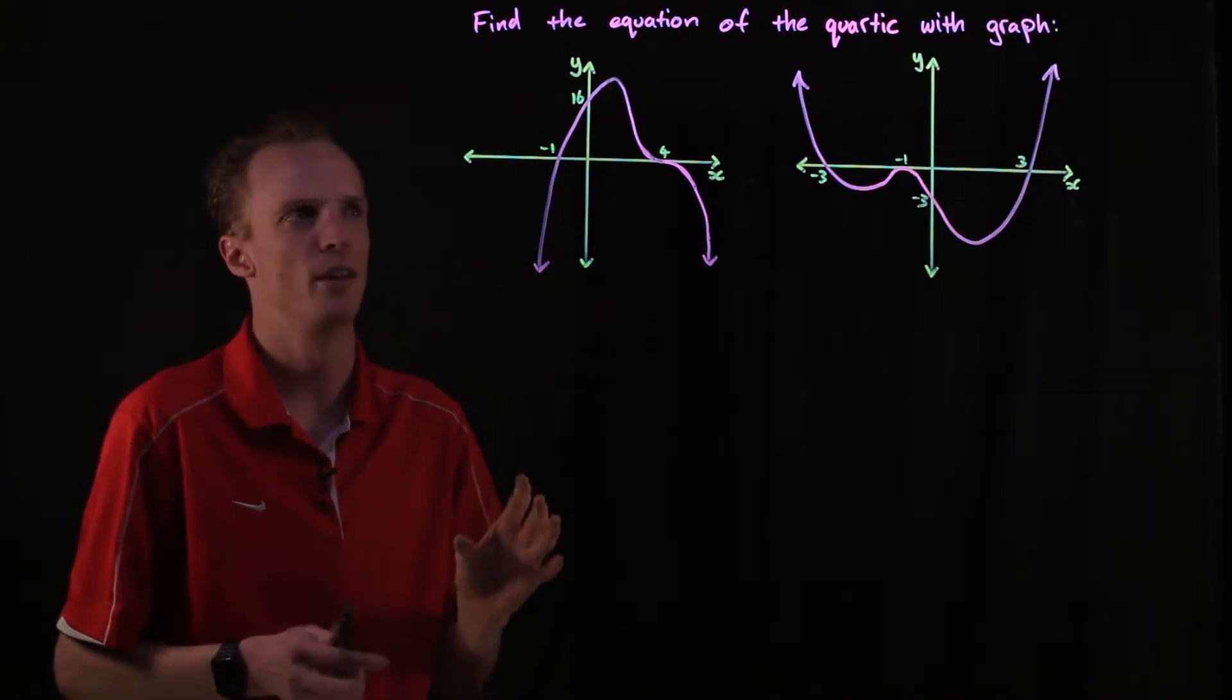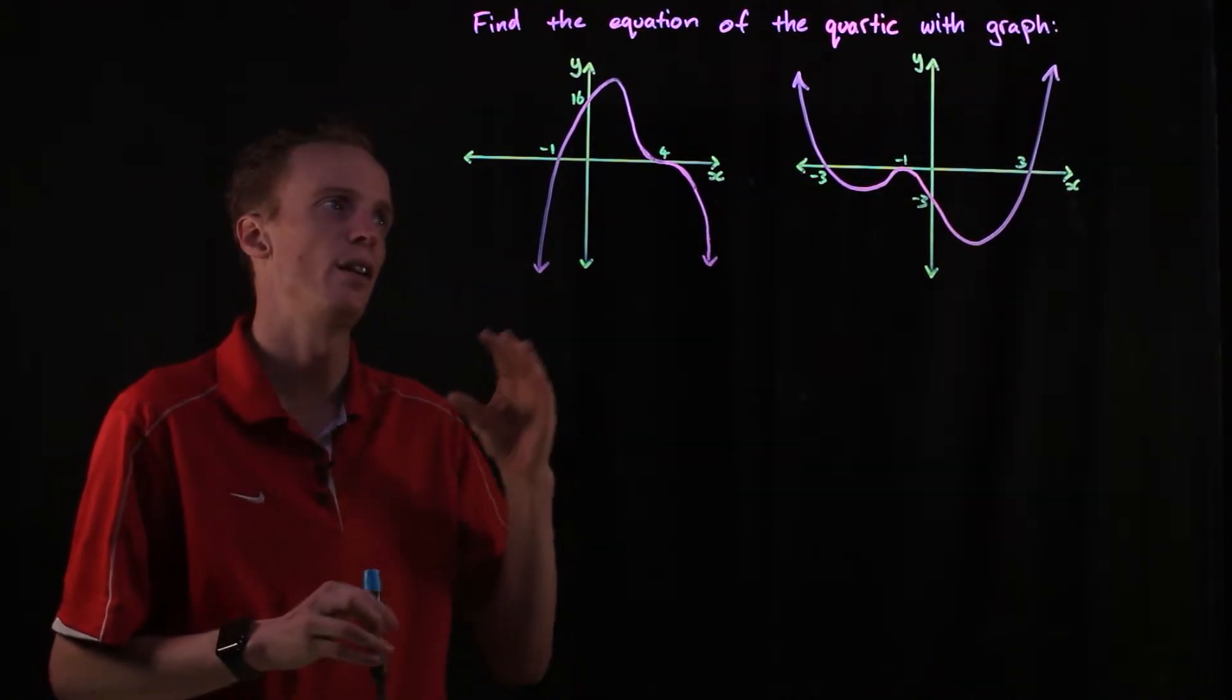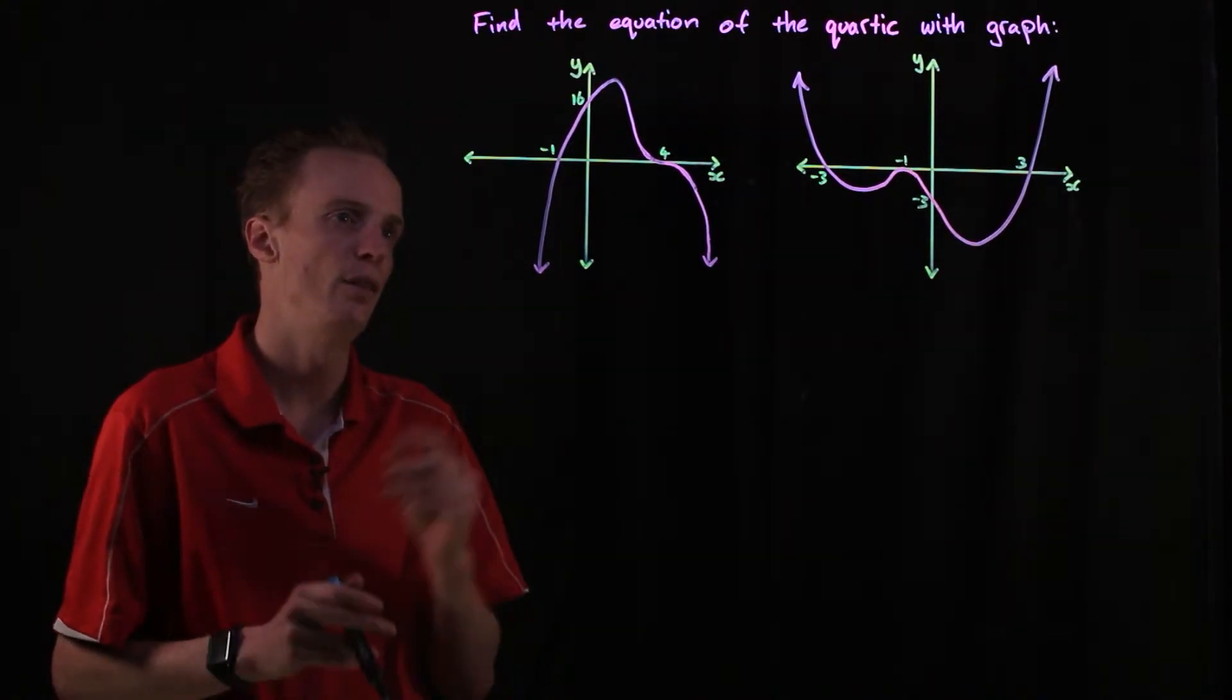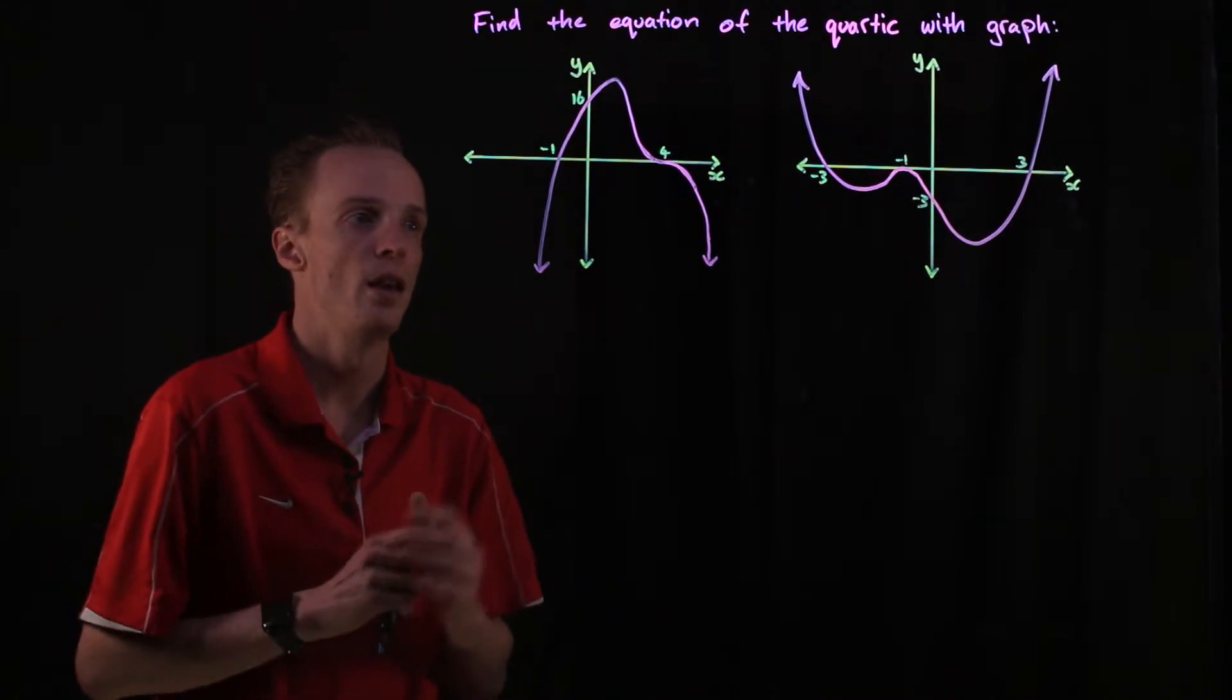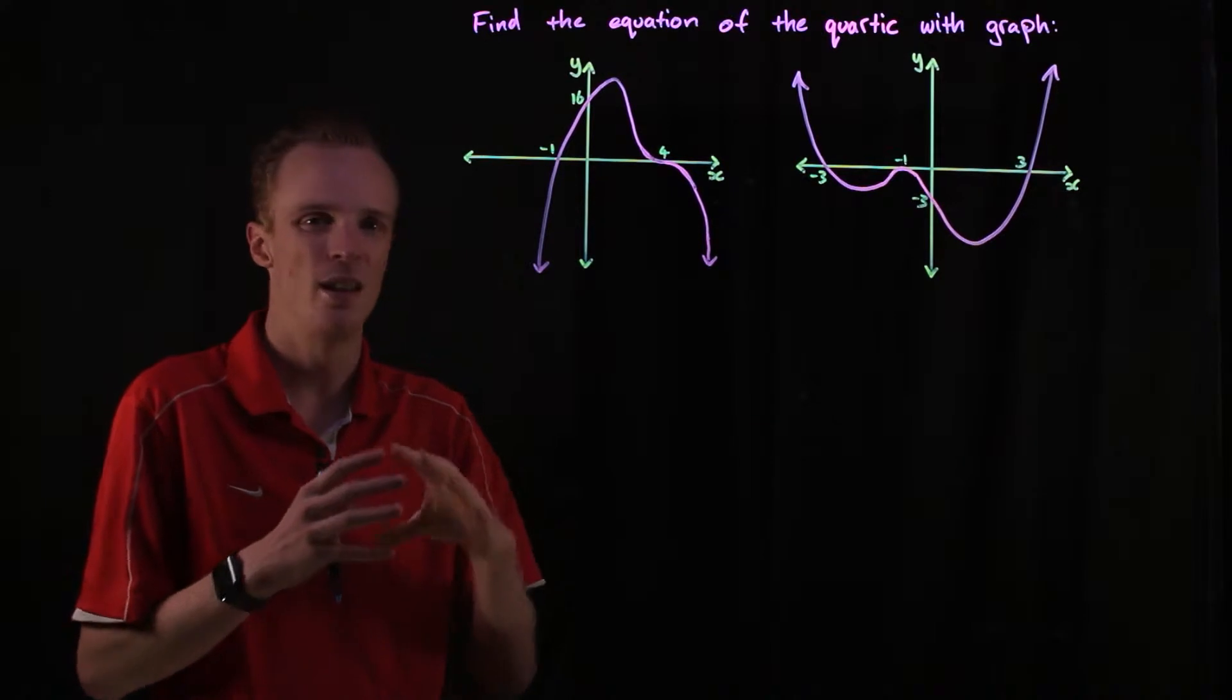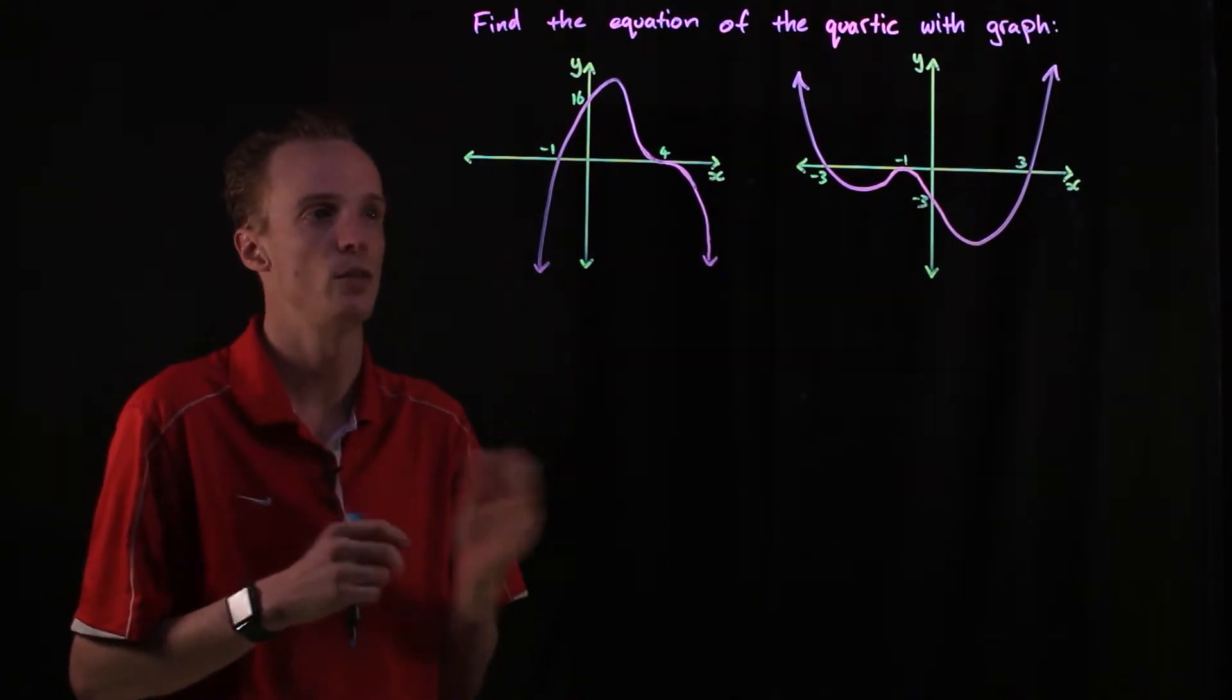What I want to quickly overview here is how we continue on and start finding equations for quartics. We've got a couple of quartics with the axes and steps given to us. What the axes and steps tell us, particularly the x-axis, is the type of root that we might have with each of these quartics.